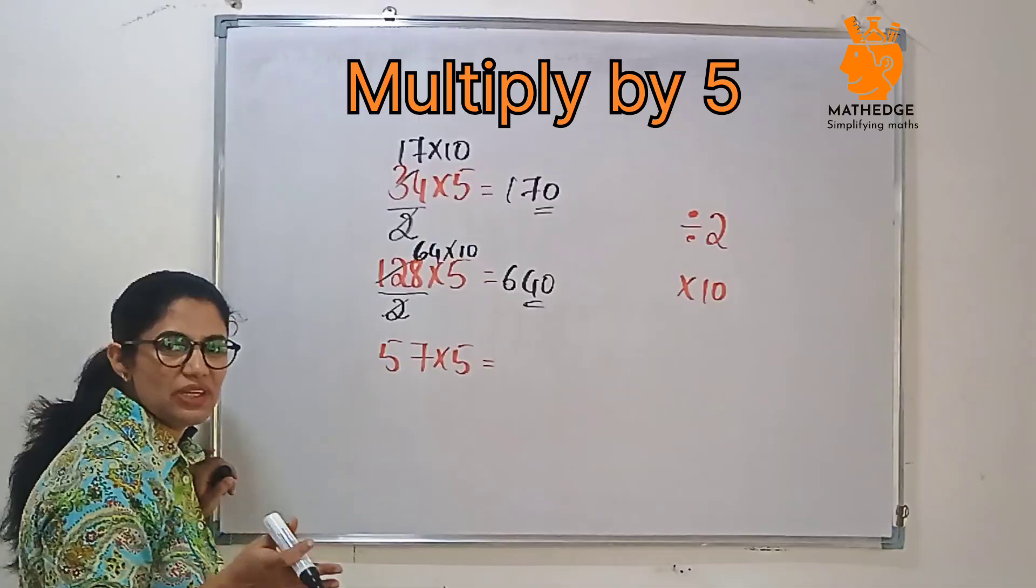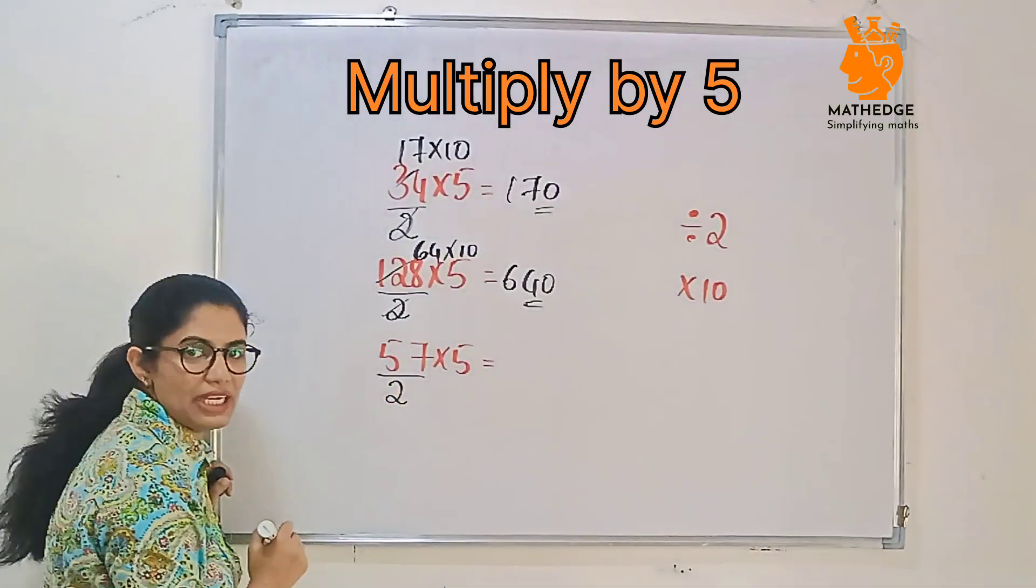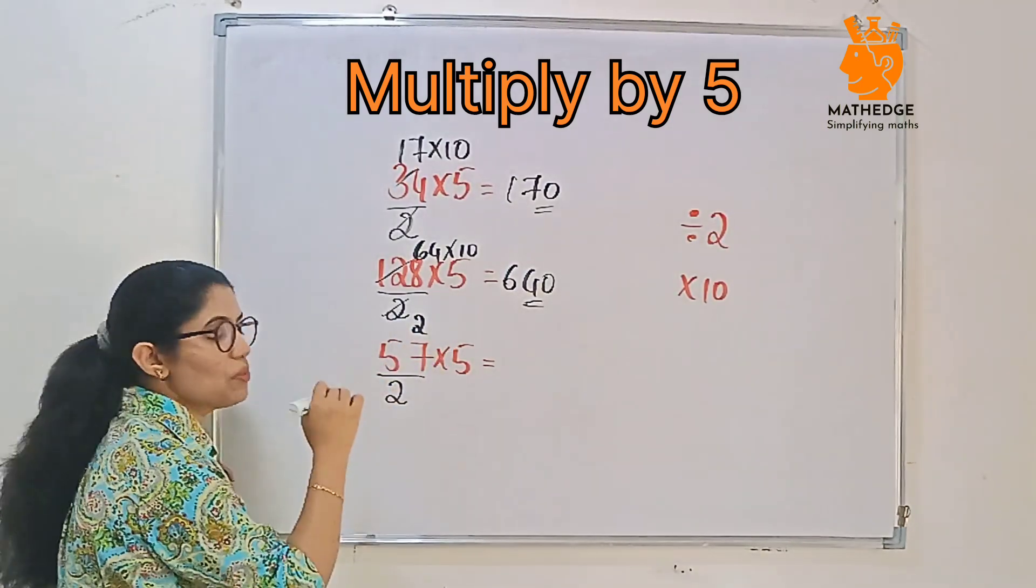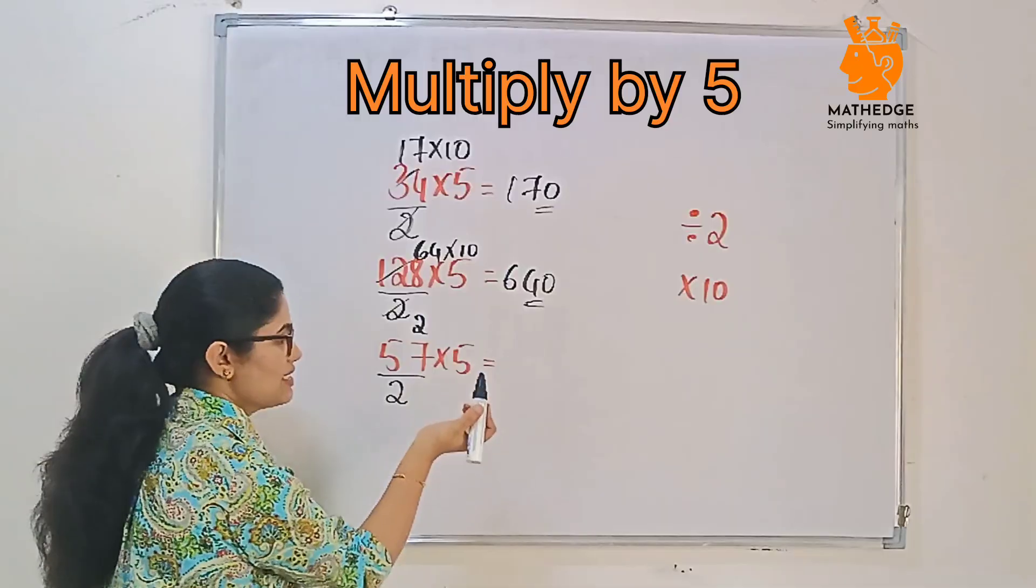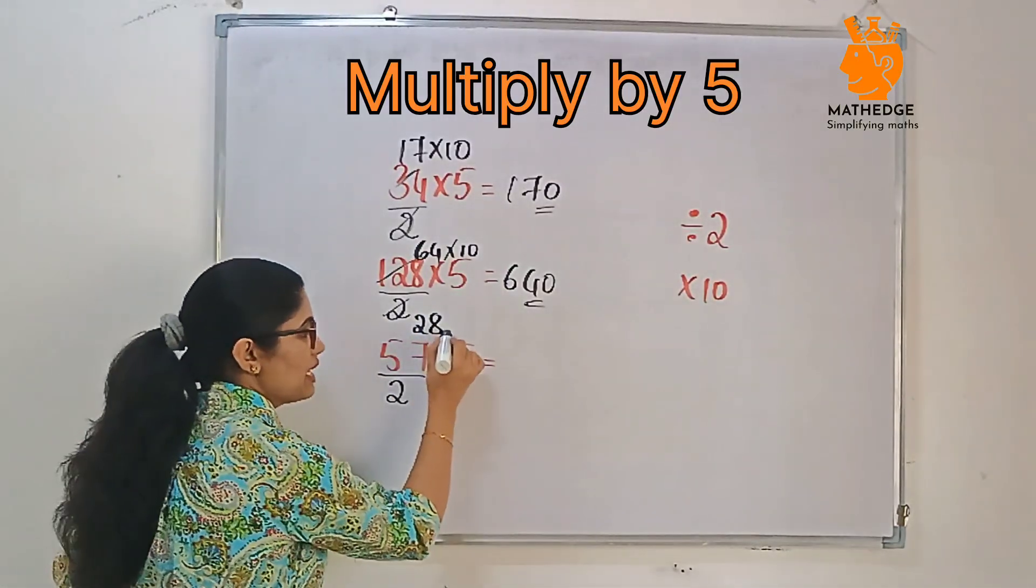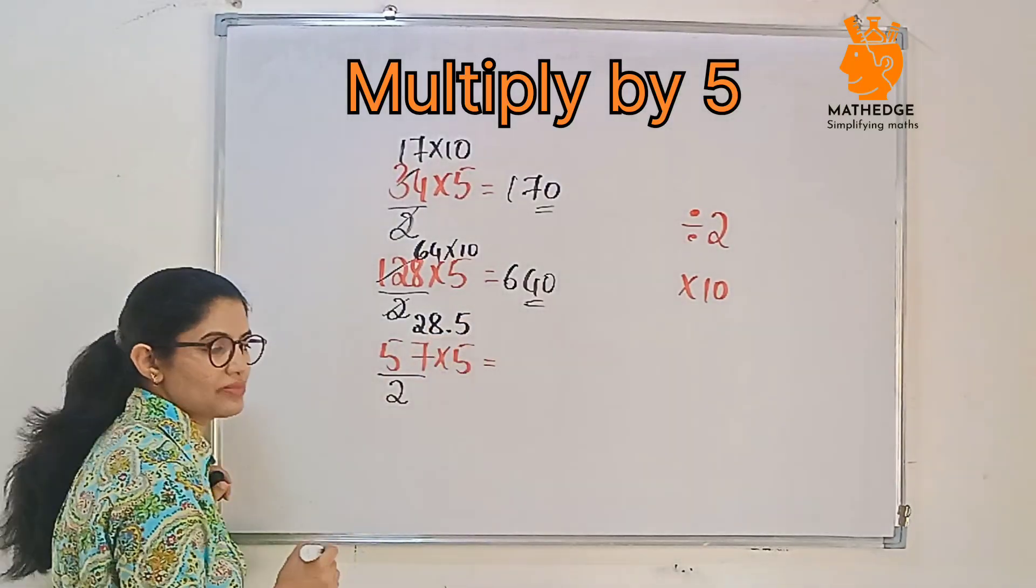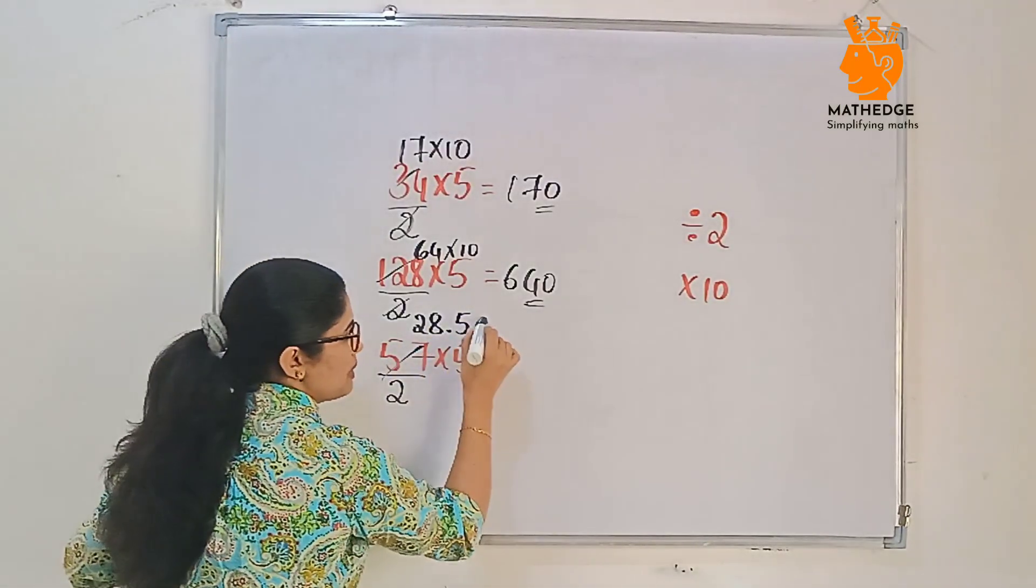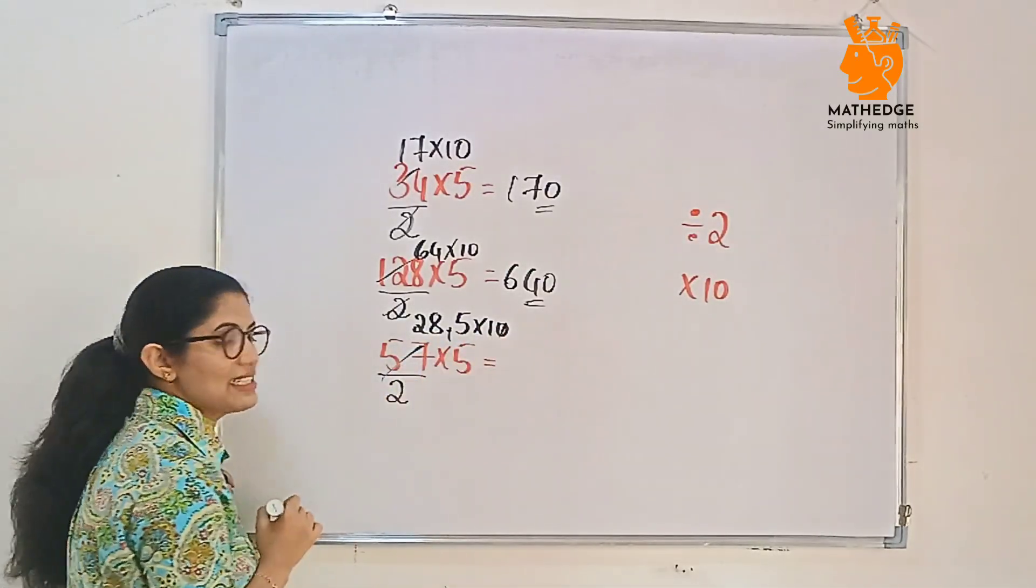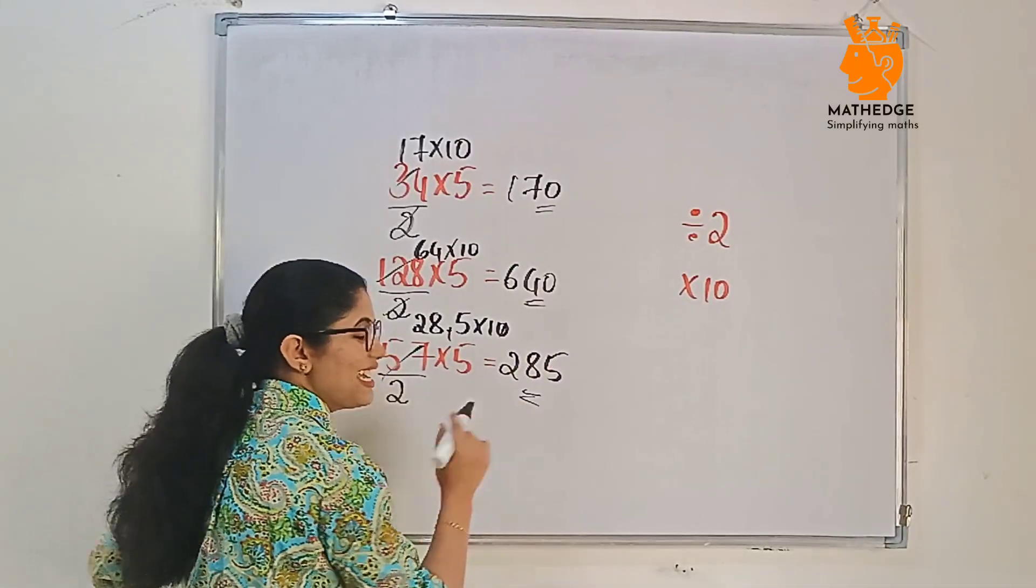Here, the number is odd. Don't worry, you just divide by 2. If you get a decimal also, we can cancel later. See, 57 by 2. 2 twos, 4. 1 will remain, then it will become 17. Then 2 eights are 16. 1 will remain, put a decimal, it will become 10. 2 fives are 10. Multiply by 10. If you are multiplying by 10, add 0 and decimal cancels with this. Then remaining is 285. Easy right?